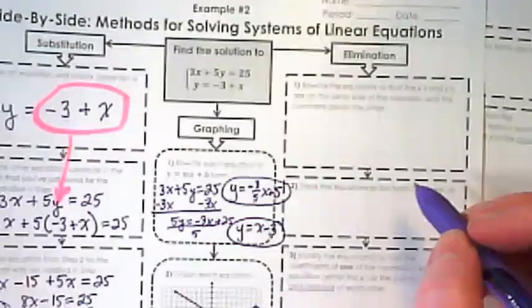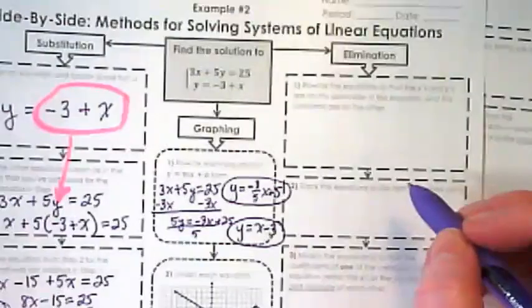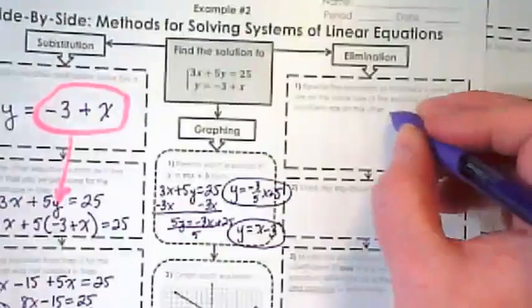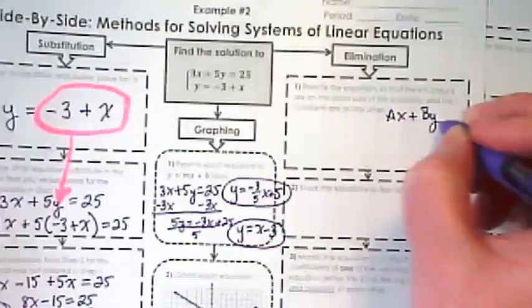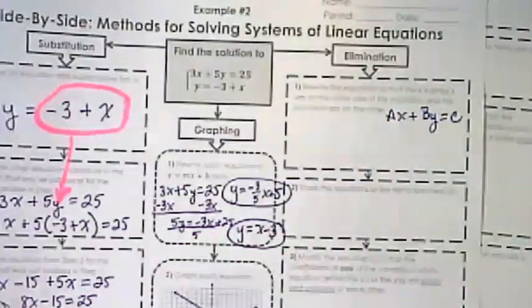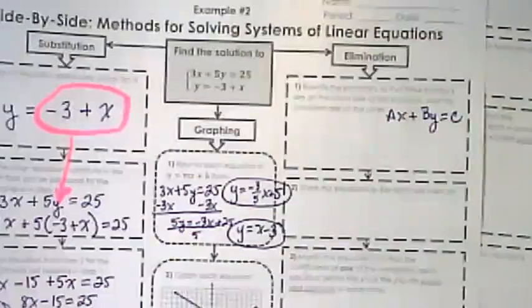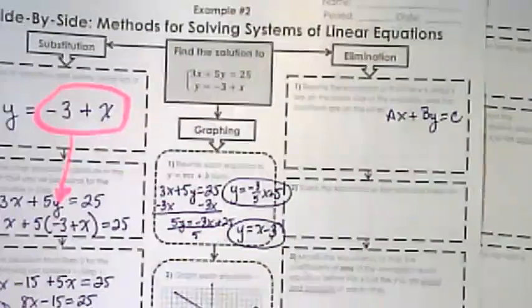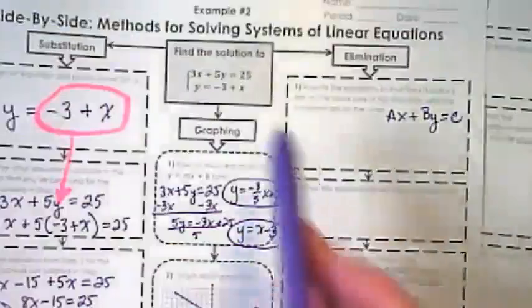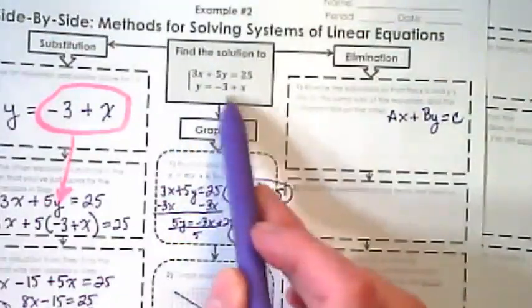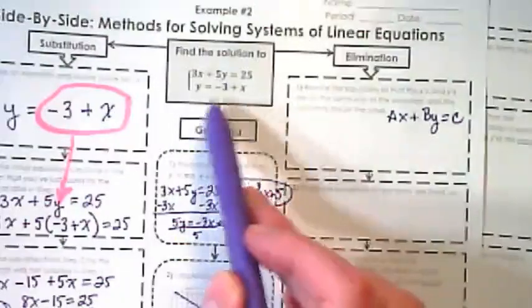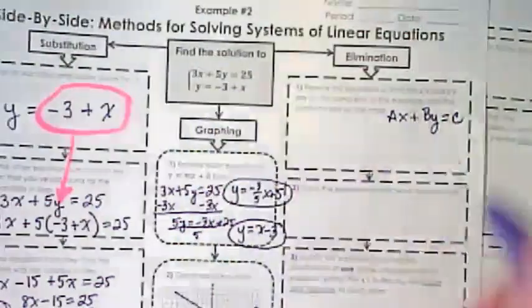Step 1, rewrite the equation so that there's x's and y's in the same side of the equation, and the constants are in the other. In other words, we want these to be ax plus by equals c. We want to get these to standard form. This first equation is already there. This second equation that works so well for substitution needs to be shifted to work for elimination.